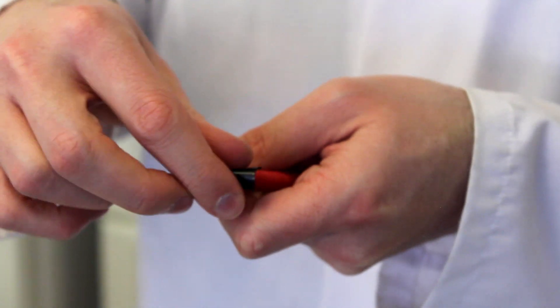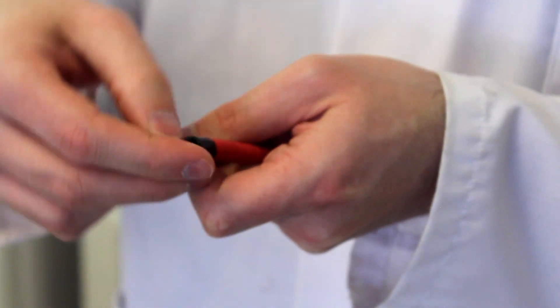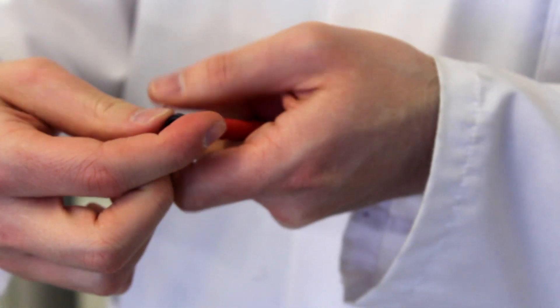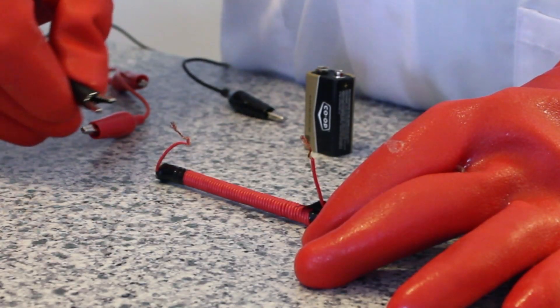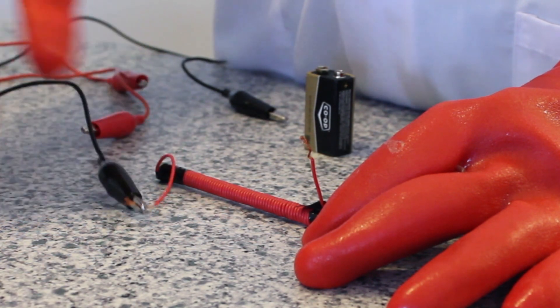Once you have your nail completely wrapped in wire, use the electrical tape on both ends of your electromagnet to secure the wire to the nail. For the final step, we're going to use some alligator clips to connect our nail to our battery. Take the one end and attach it like so.